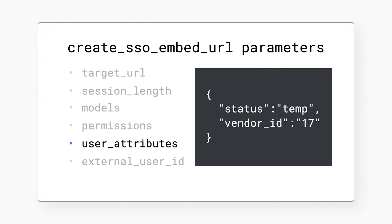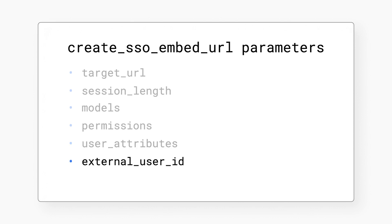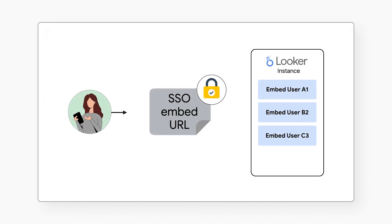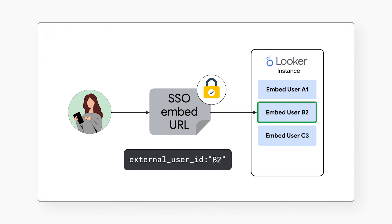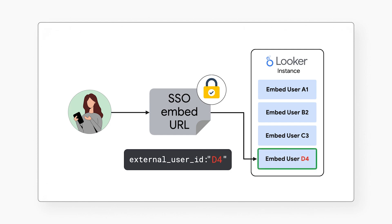The user attributes parameter helps govern your user's data access. The most important parameter to consider is the external user ID. When your user accesses your embedded content, Looker logs them in automatically as an embed user — also called an external user. You must define an external user ID on your SSO embed URL so Looker can associate your user with the correct embed user. If the external user ID does not match any existing embed user ID, Looker logs in your user as a new embed user with the permissions and ID defined in the URL. Typically, you should use your host application's user ID as the external user ID.